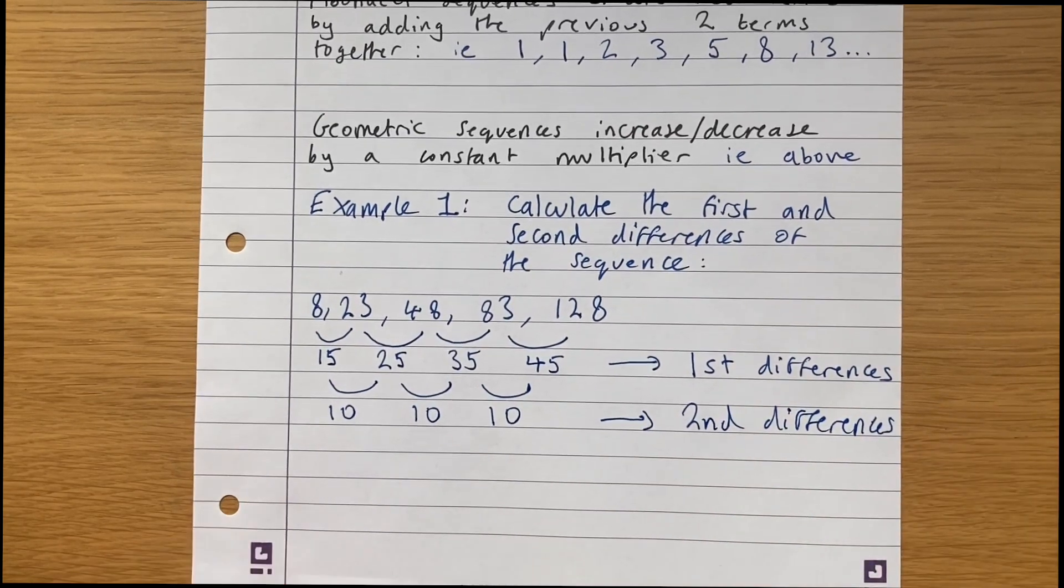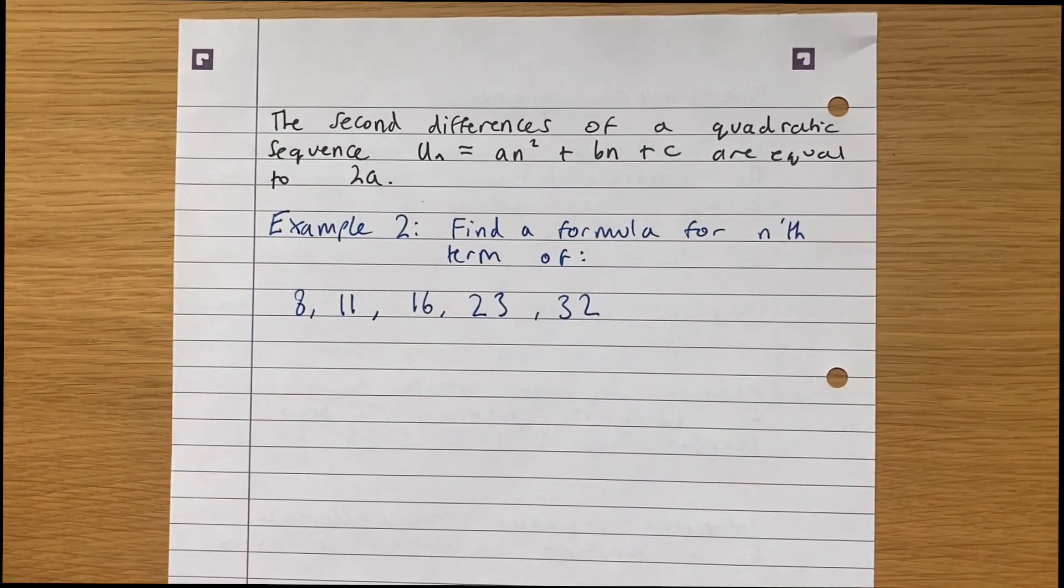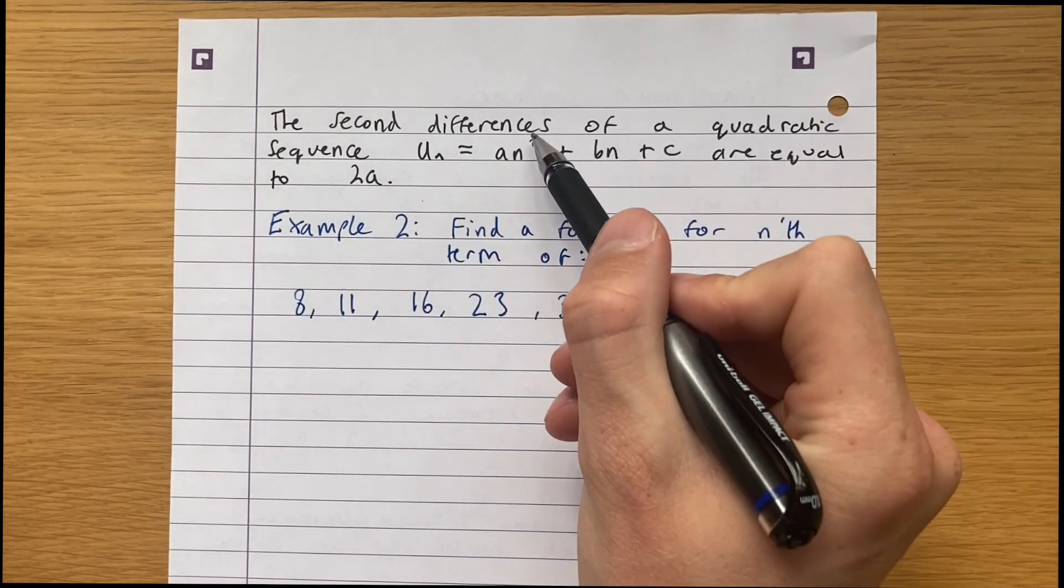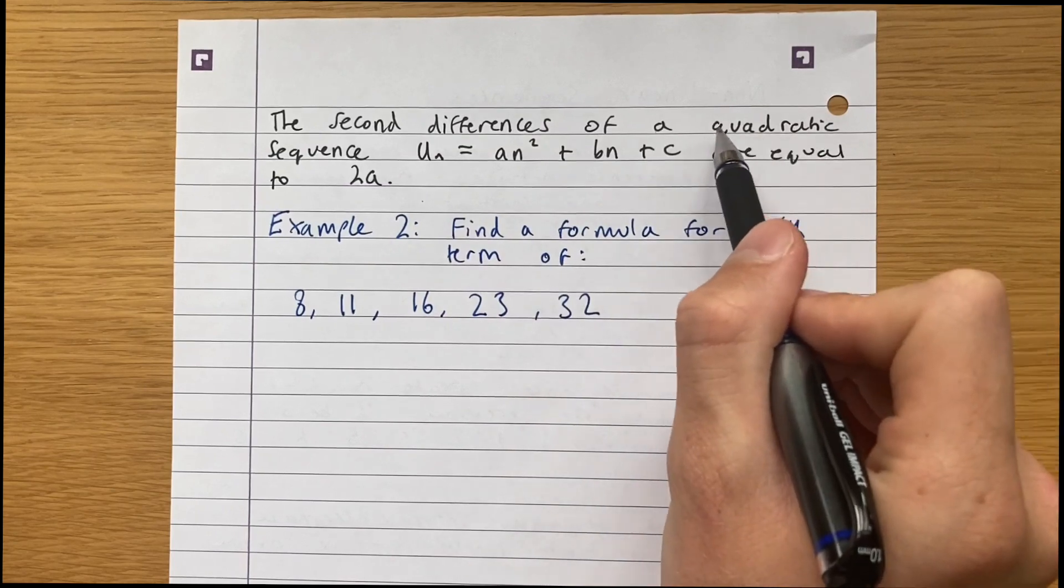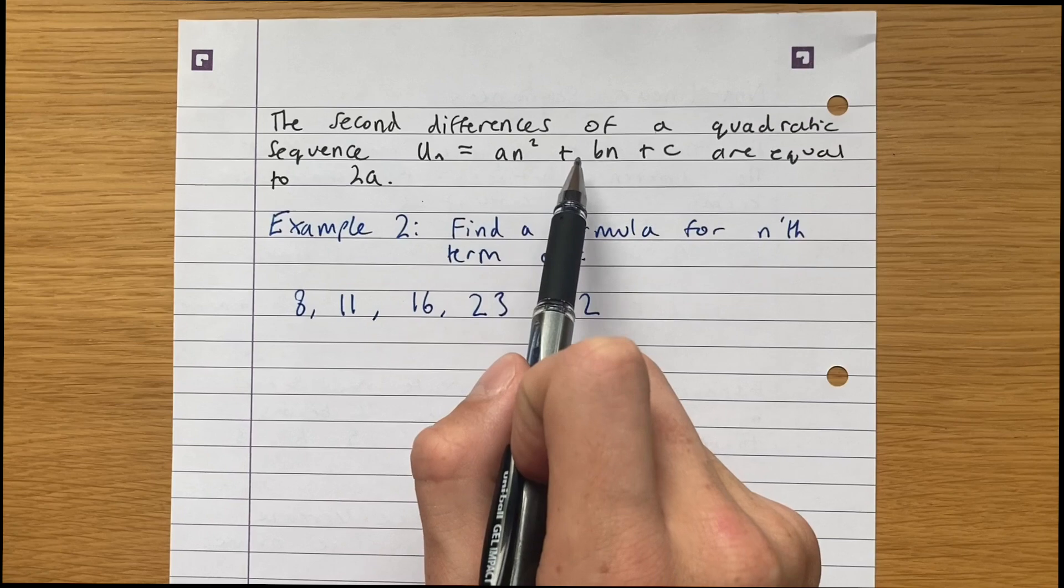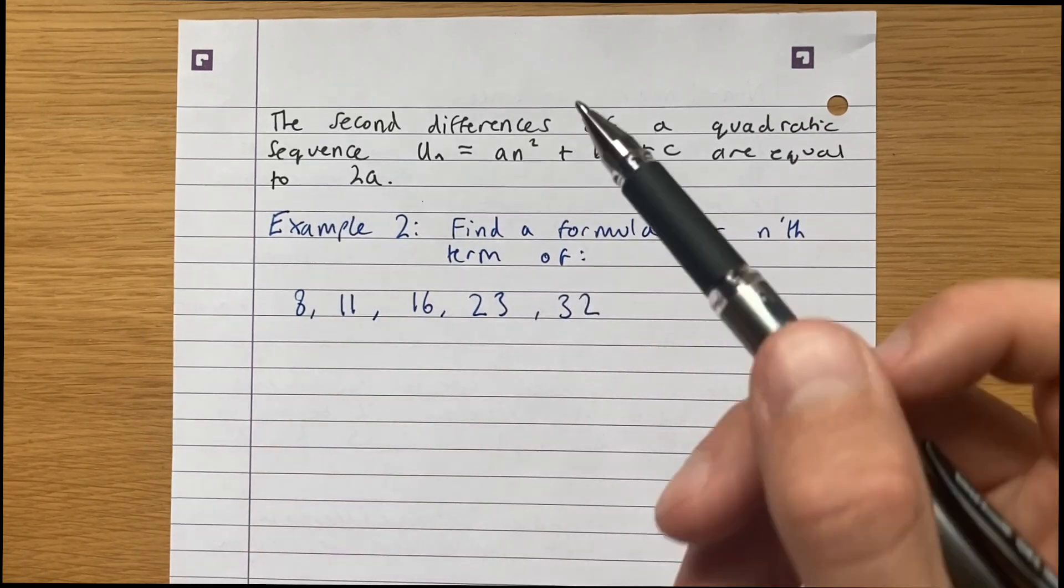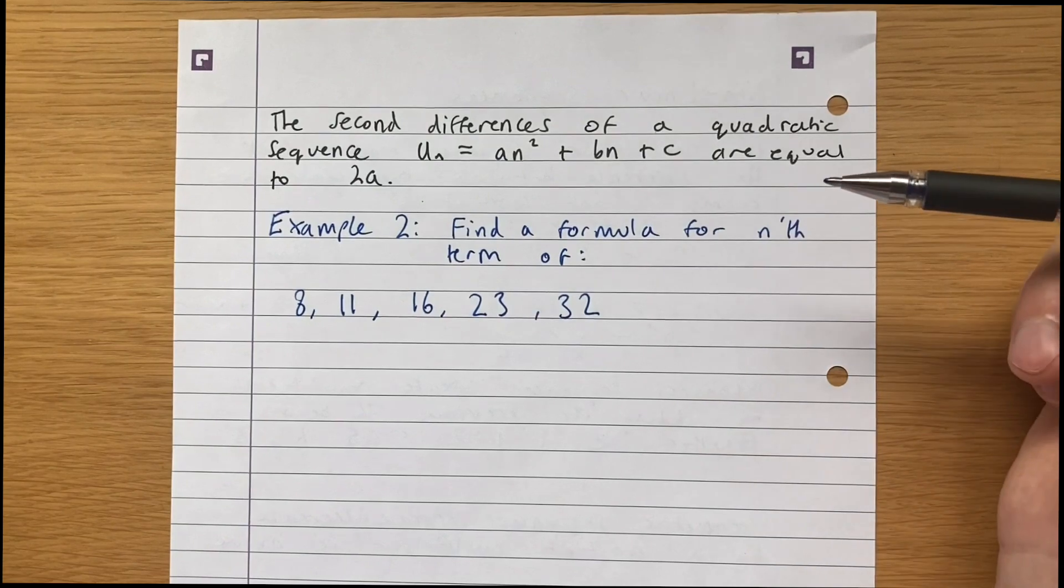These are going to be very useful later on. The second differences of a quadratic sequence, meaning the highest power is squared, that's what quadratic means. The second differences of a quadratic sequence, un equals an squared plus bn plus c are equal to 2a. This is really useful when we're trying to find formulas for the nth term.